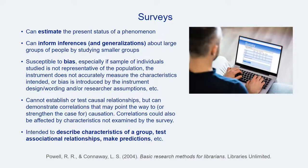Surveys are generally considered a quantitative approach to assessment. They're used to estimate the current status of a particular issue, concept, or phenomenon, and are often used to make generalizations about large groups of people by studying smaller groups and using inference. Surveys are susceptible to bias, particularly when respondents are not representative of the intended population, or when the survey does not accurately measure what it intends to measure. In general, surveys are commonly used to describe characteristics of groups, explore associational relationships or correlations, and make predictions.